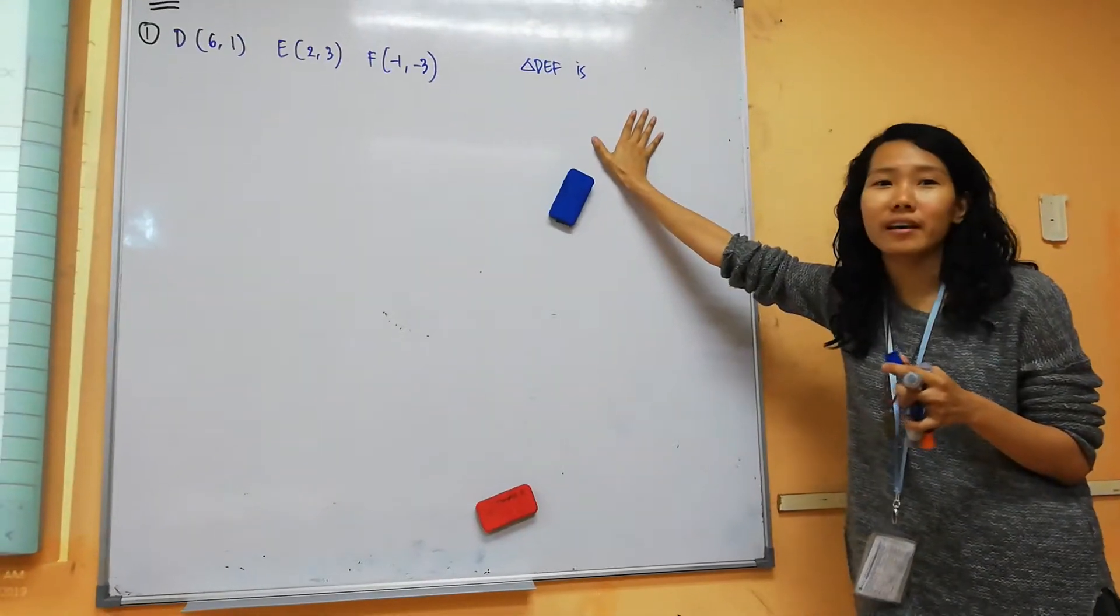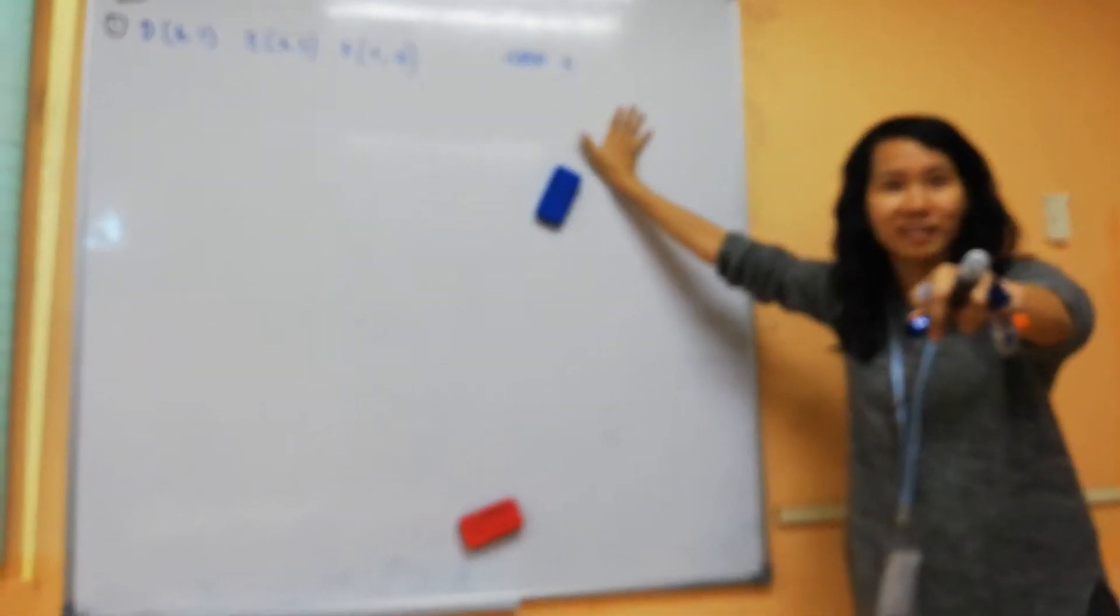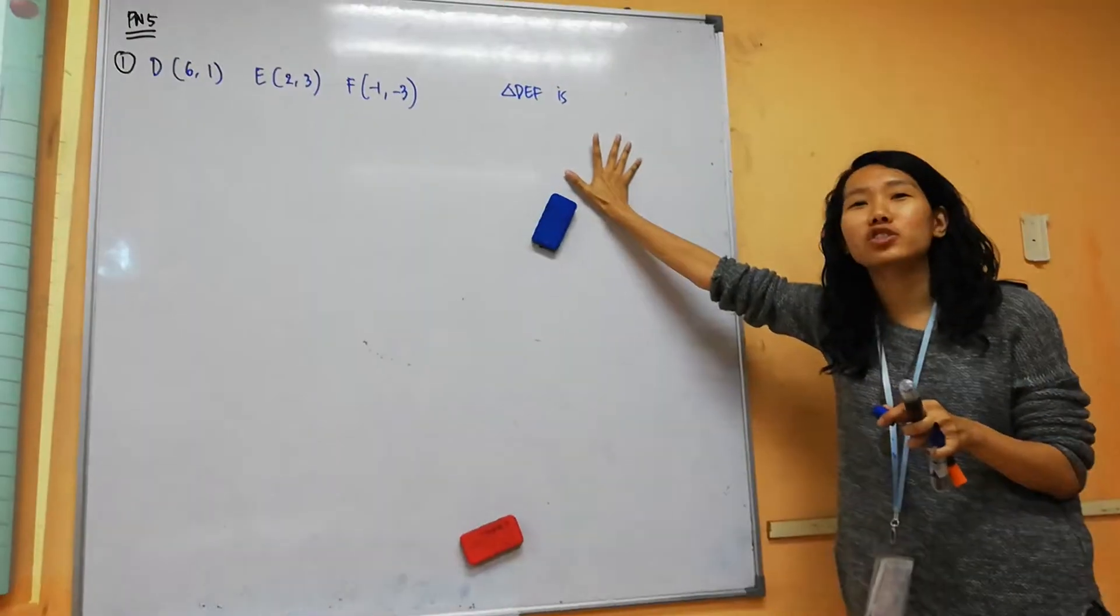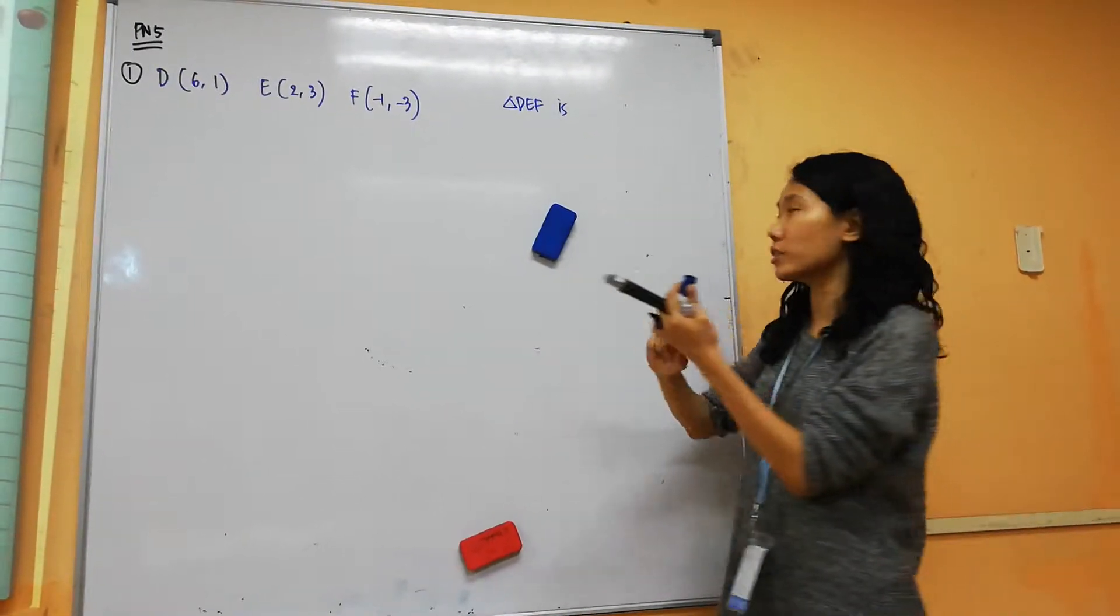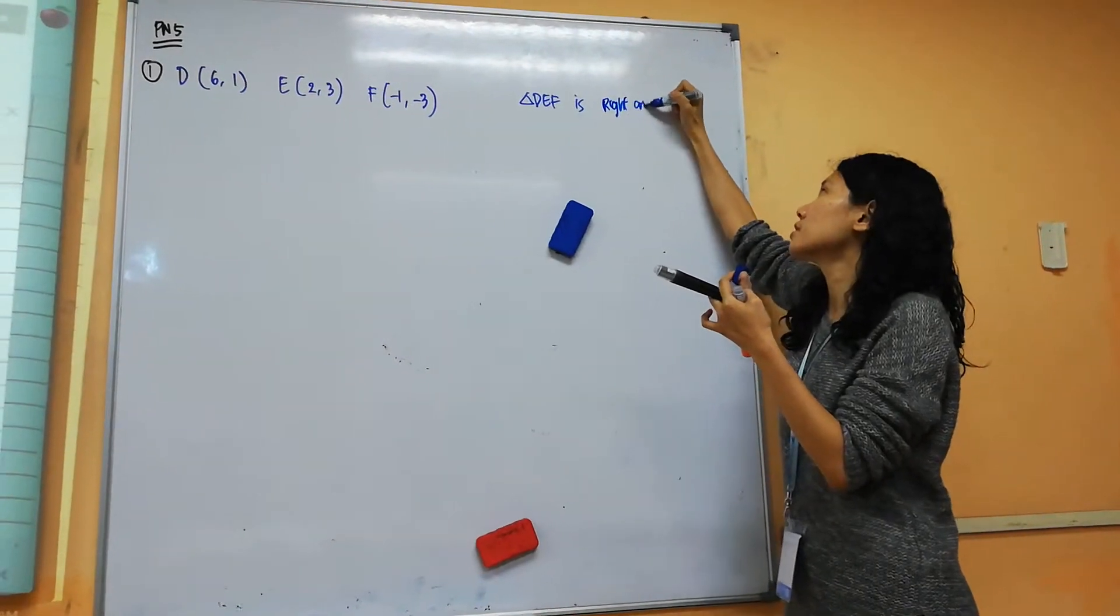It's D, E and F. So they show that triangle D, E, and F is actually a right angle triangle.